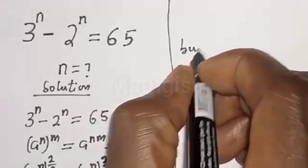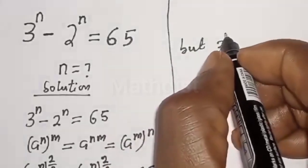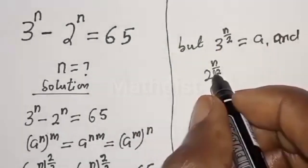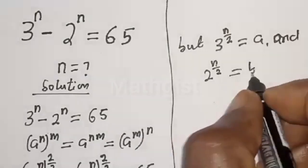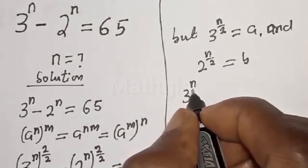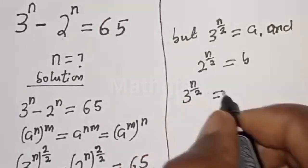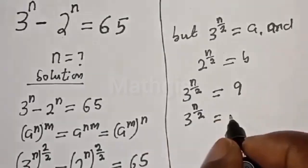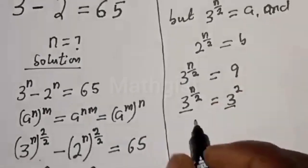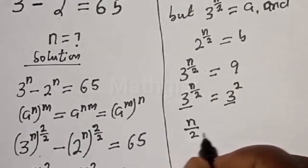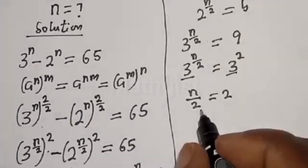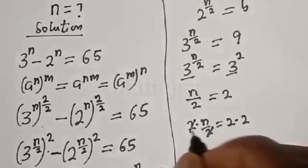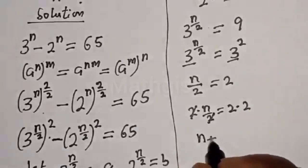Recall that 3 raised to power n over 2 equals A, and 2 raised to power n over 2 equals B. So 3 raised to power n over 2 equals 9, which equals 3 squared. By the same base rule, n over 2 equals 2. Multiplying both sides by 2, we get N equal to 4. That is the value of N.